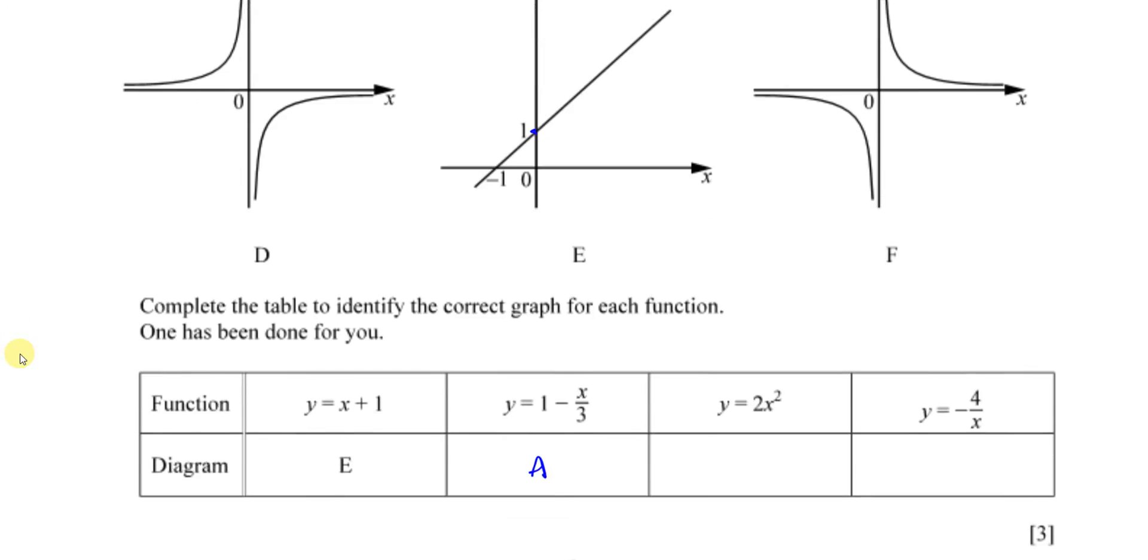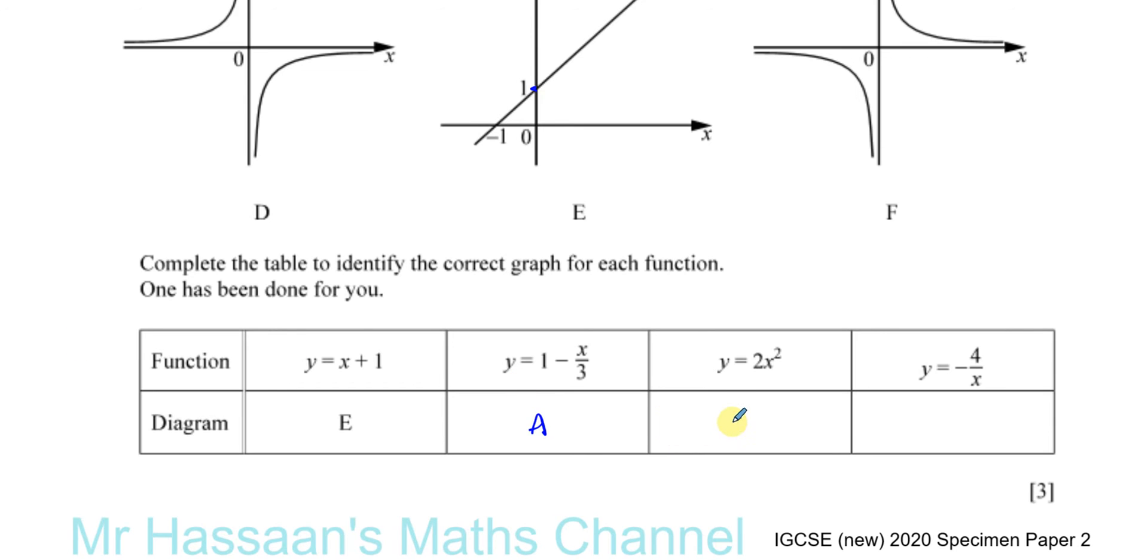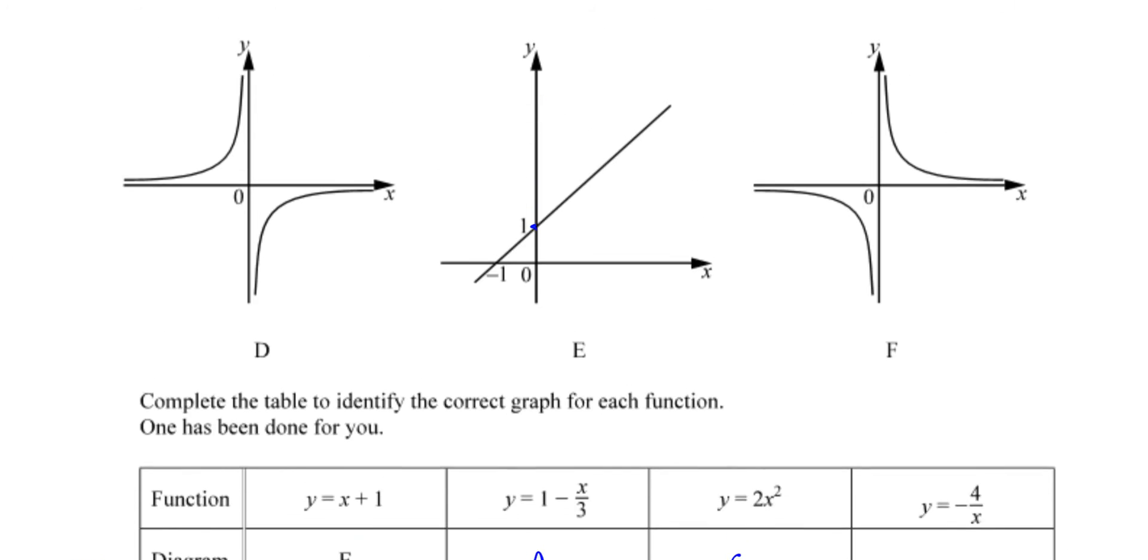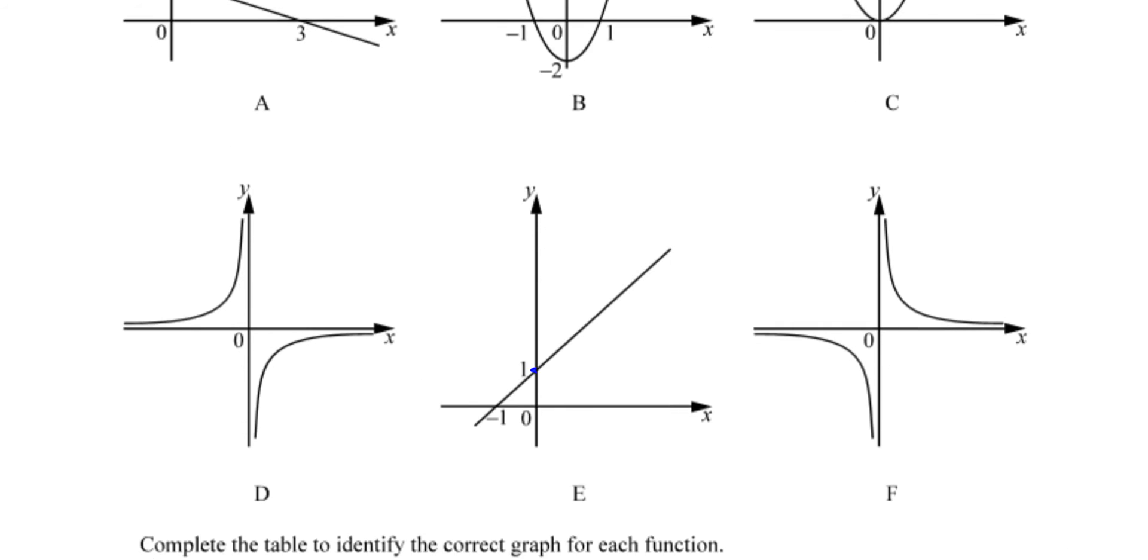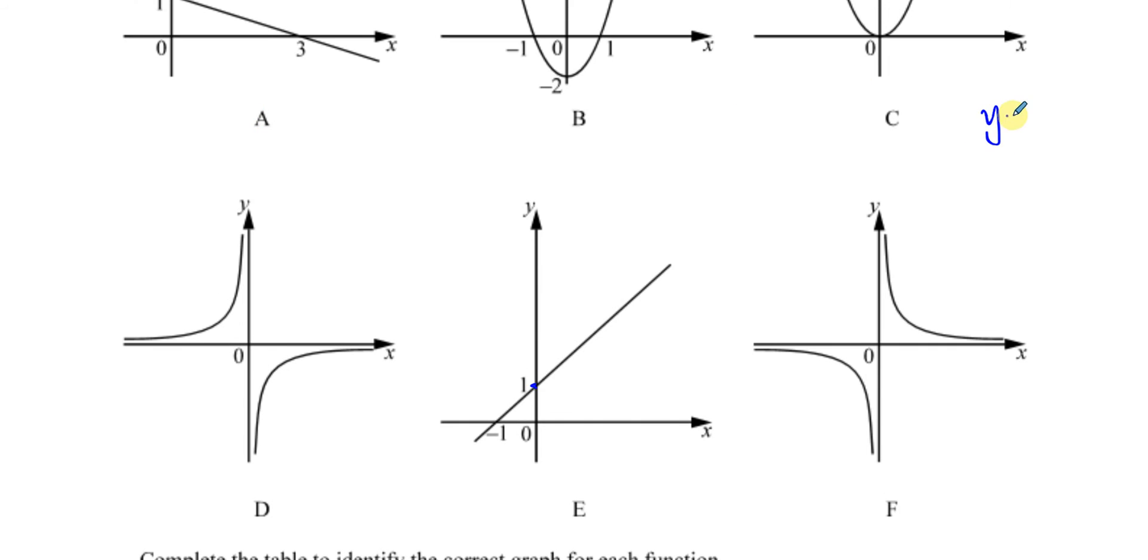This is y = -4/x. Now of course it's only out of D and F—all the others are taken. y = -4/x is a reciprocal graph, and the reciprocal graph with a negative is going to look like D.